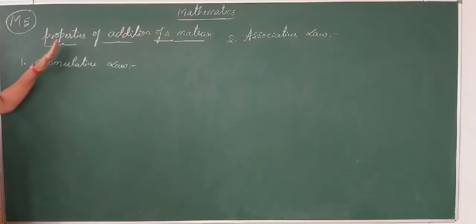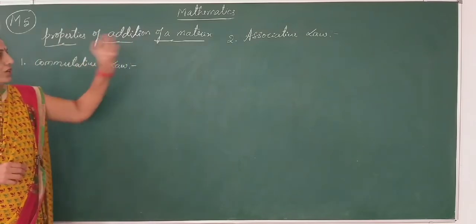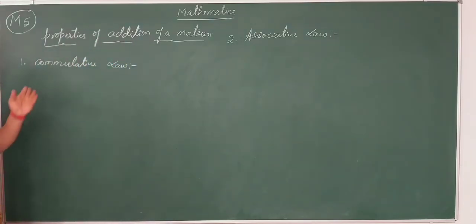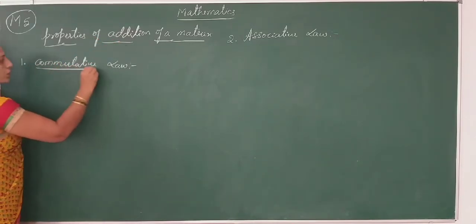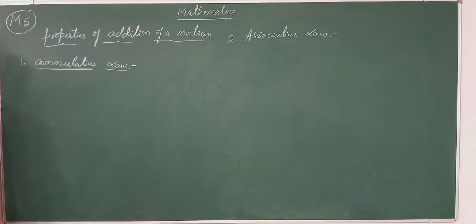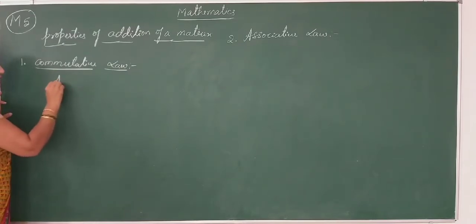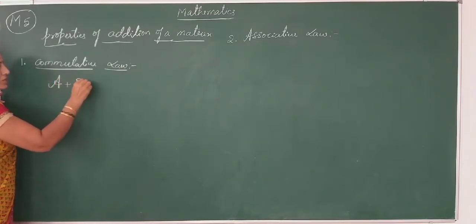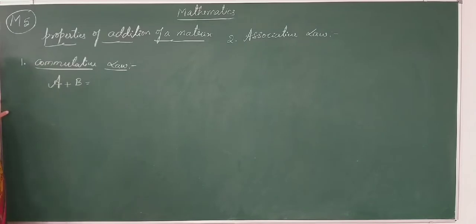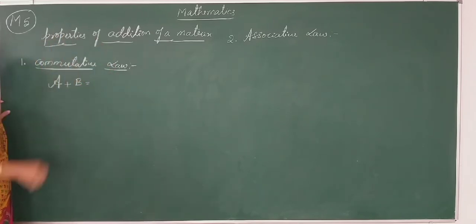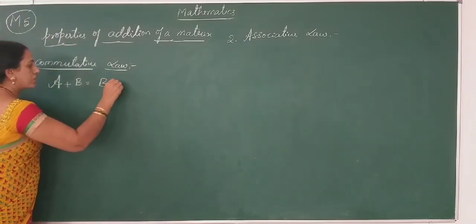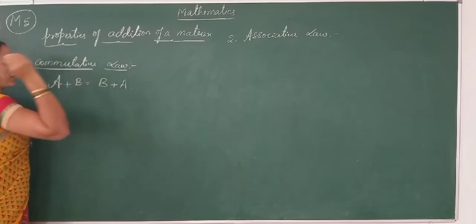Next are the properties of addition of matrices. The first property is the commutative law. We already know that addition is always commutative. The same concept applies to matrices: A+B can also be written as B+A.